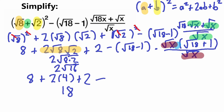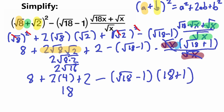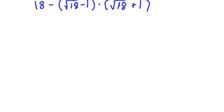We also have our square root of 18 minus 1, and after canceling the square roots of x we are left with square root of 18 plus 1. So our equation now looks much cleaner. We have 18 minus the quantity square root of 18 minus 1 times the quantity square root of 18 plus 1. Looking at these two terms being multiplied, they look very similar — square root of 18 on both — but one has a minus and one has a plus.